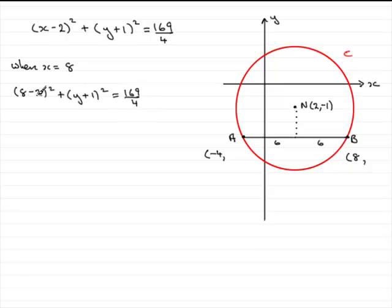We know that 8 take 2 is 6 and 6 squared is 36, so therefore we have 36 plus (y plus 1)² equals 169 over 4.